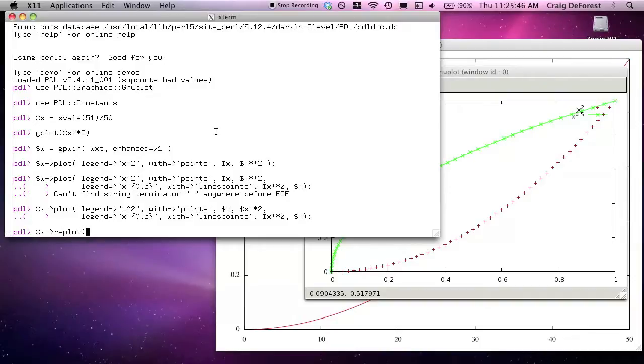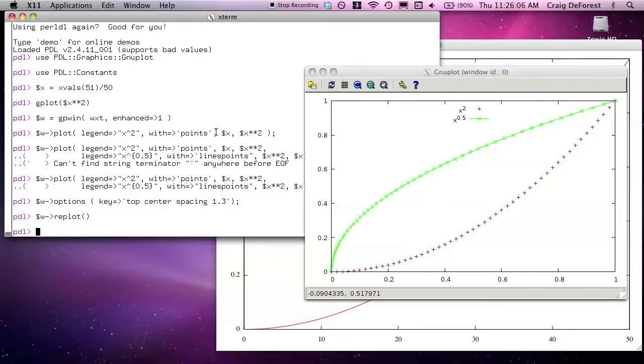We can replot. Let's do this. I can set persistent options in the object, and these are plot options that describe how plots will appear. Let's do key top center spacing 1.3. You can replot, and the persistent options will now be applied to the plot. So far so good.